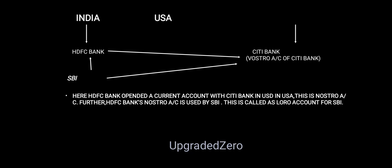For example, suppose India's HDFC Bank has maintained an account at Citi Bank USA — it is a Vostro account for Citi Bank and a Nostro account for HDFC Bank. Now SBI goes to HDFC and says 'we need to do an international transaction, so kindly provide your Nostro account details or maintain our account with your account.' That will be a Loro account. HDFC Bank opens a current account with Citi Bank in the US — this is the Nostro account. Further, HDFC Bank's Nostro account is used by SBI — this is called a Loro account for SBI.